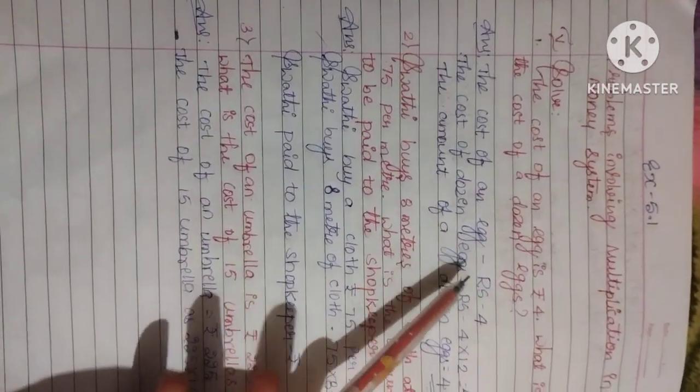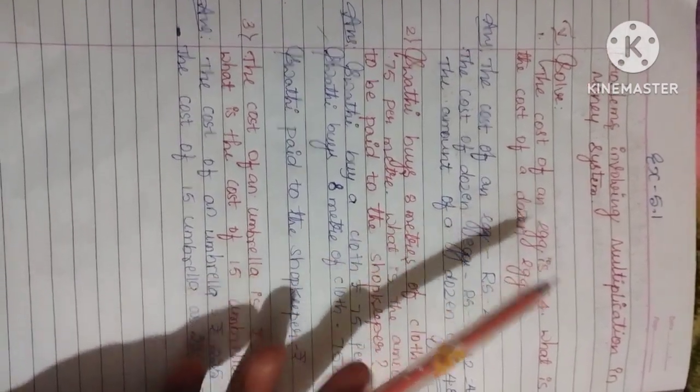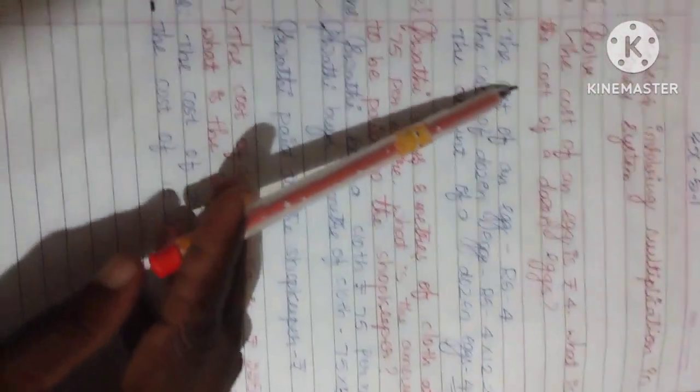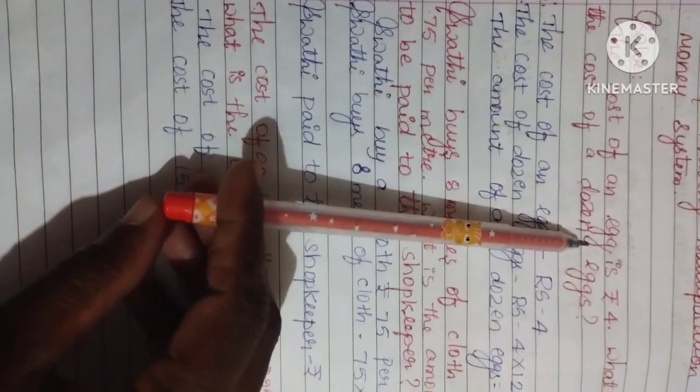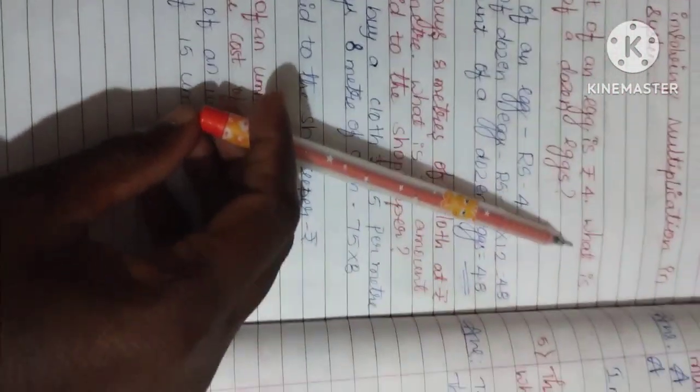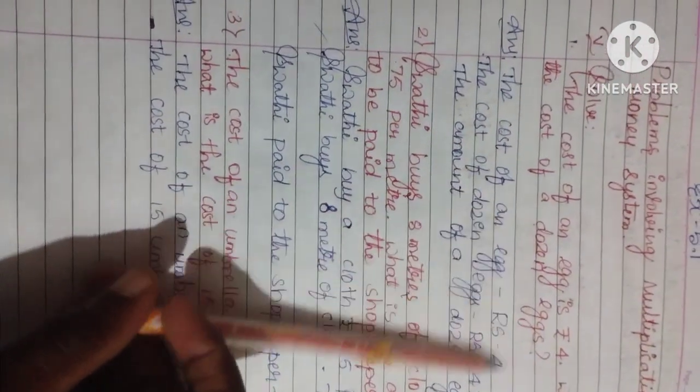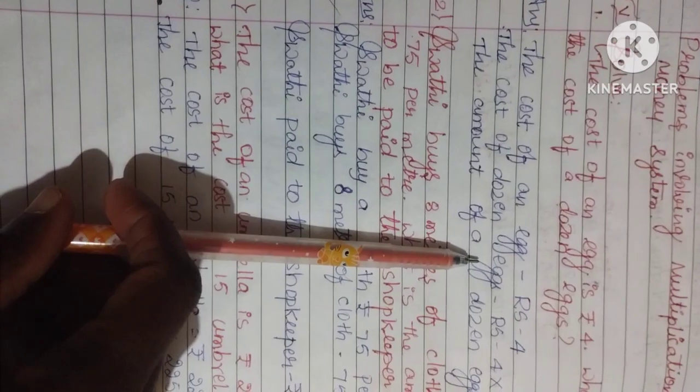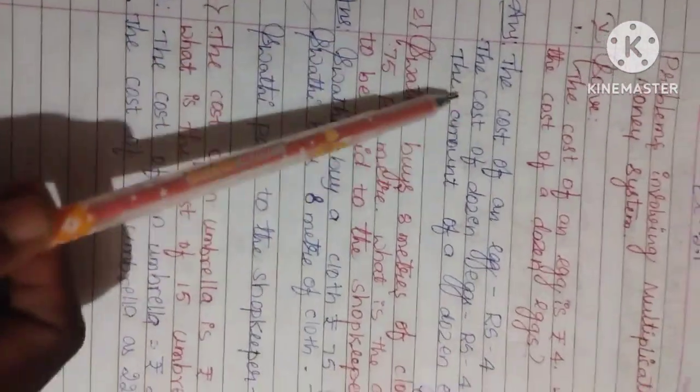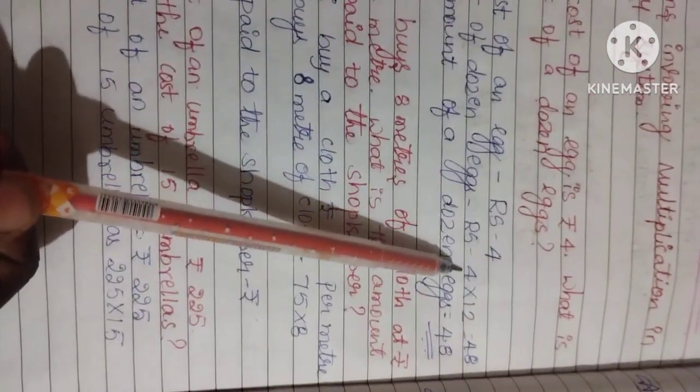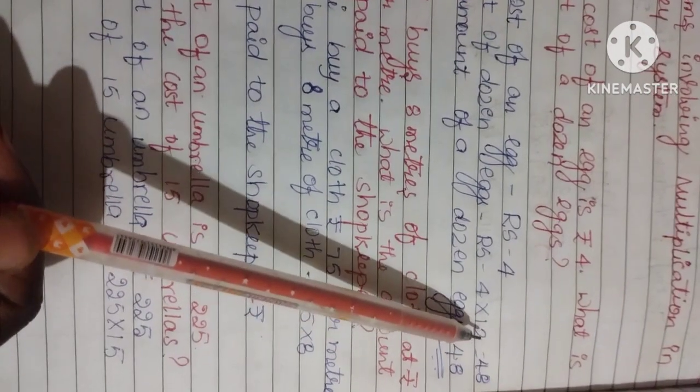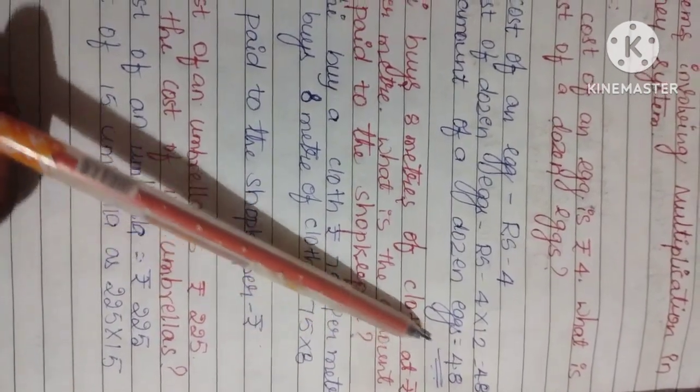This is the 5th main, Exercise 5.1. The cost of an egg is 4 rupees. What is the cost of a dozen eggs? One dozen equals 12. The cost of an egg is 4 rupees, so the cost of a dozen eggs equals 4 into 12. Twelve times 4 is 48. The amount for 12 eggs is 48 rupees.